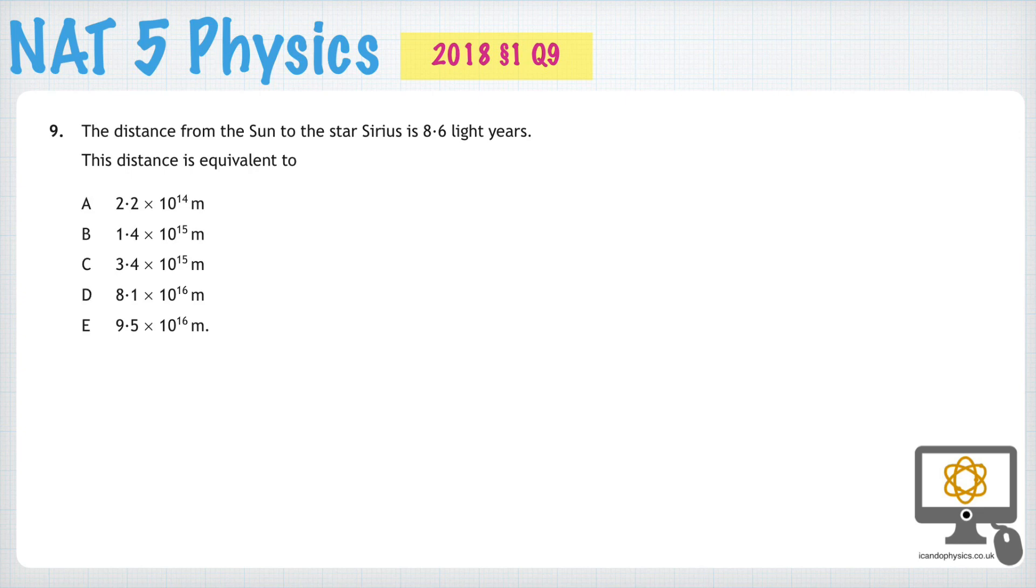What we need to understand here is that one light year is a distance, it's the distance that light can travel in one year. Therefore, what we need to use is the equation distance equals speed multiplied by time, where speed is the speed of light and time is the time for one year.